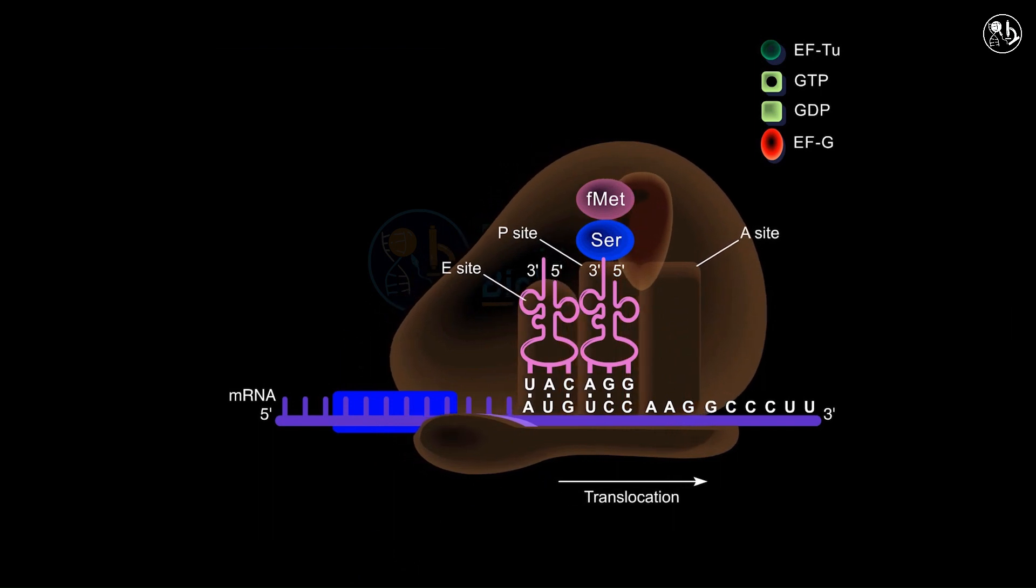The ribosome binds to an EF-G-GTP complex which triggers the hydrolysis of GTP and initiates the translocation process. The uncharged tRNA transitions from the P site to the E site, preventing any new aminoacyl tRNA from binding to the A site until the translocation is finalized. Once the tRNA is securely positioned in the P site, the uncharged tRNA is expelled from the E site.